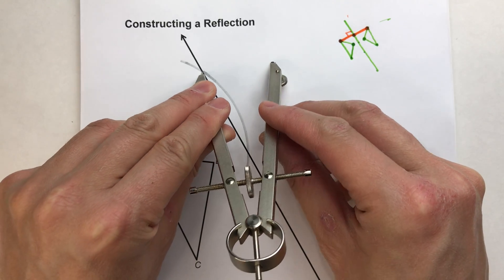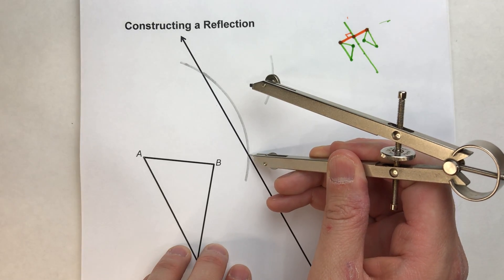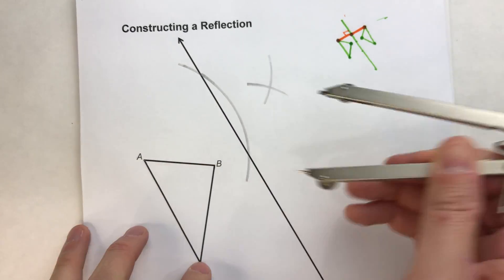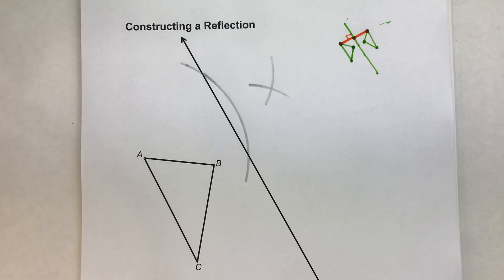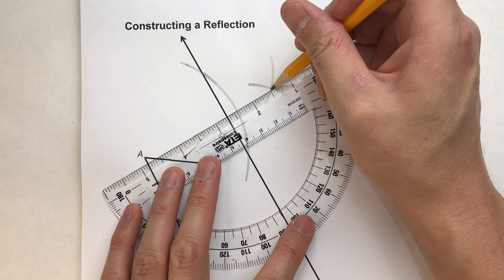And then off one intersecting point I'll swing an arc. Off the other intersection point I'll swing an arc. And now I know where my perpendicular is. It's going to go from A to this point right here.